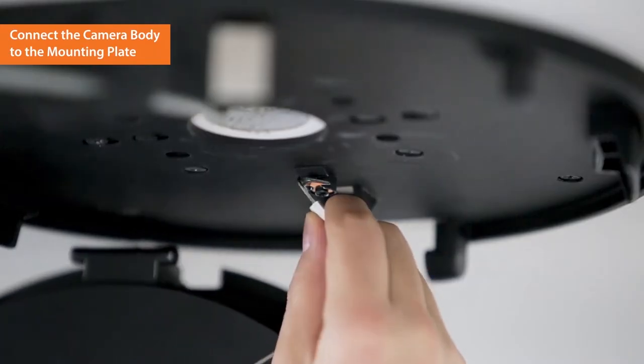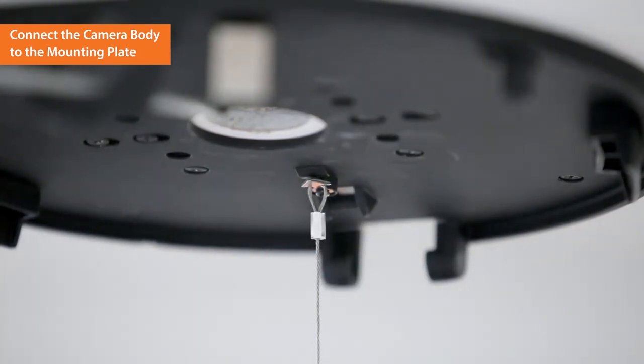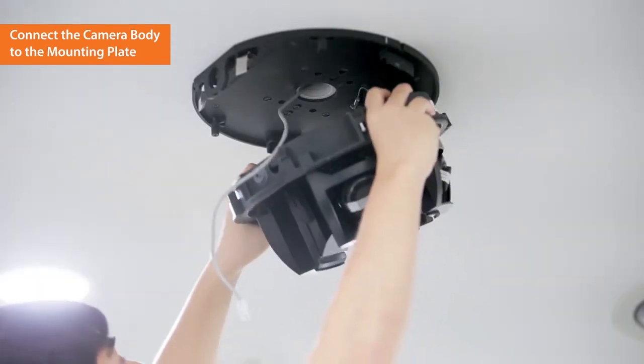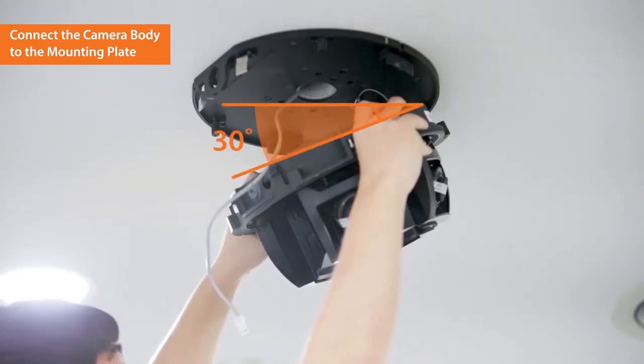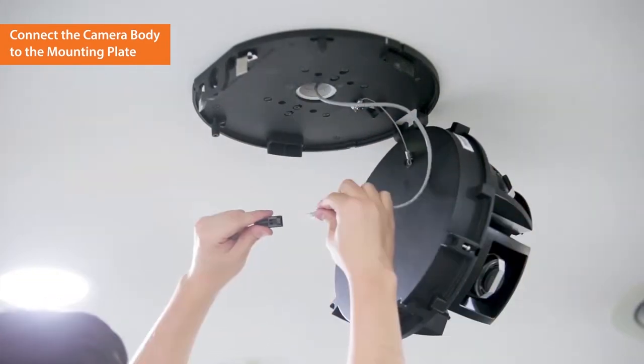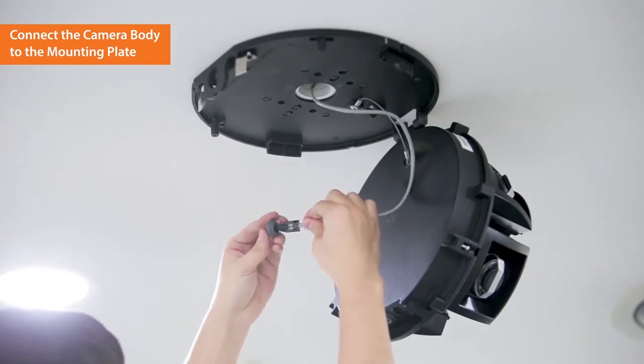Connect the safety cable to the mounting plate to prevent an accident while installing the camera. Insert the camera body into the mounting plate hinge by maintaining a 30 degrees angle. Connect the LAN cable to the terminal inside the camera using RJ45 cap and flexible bush.